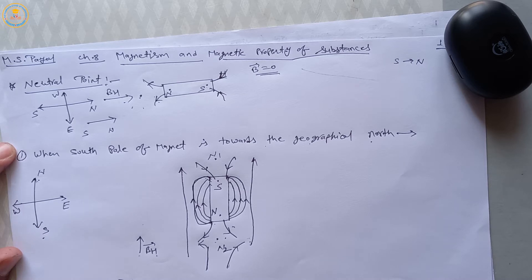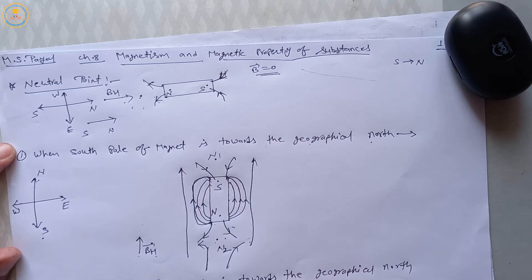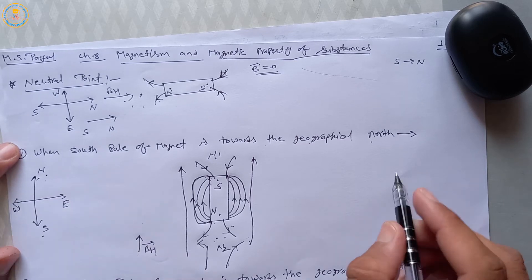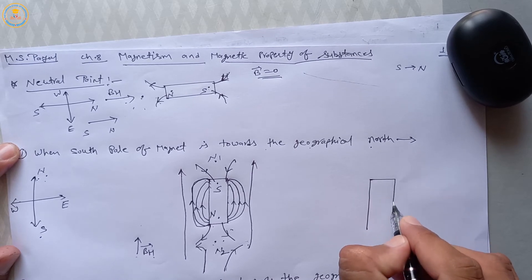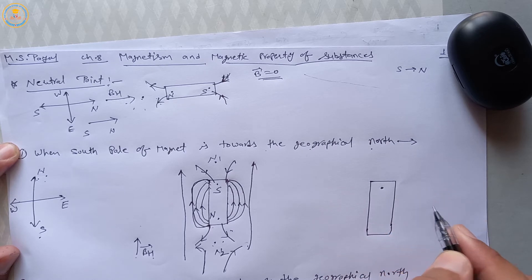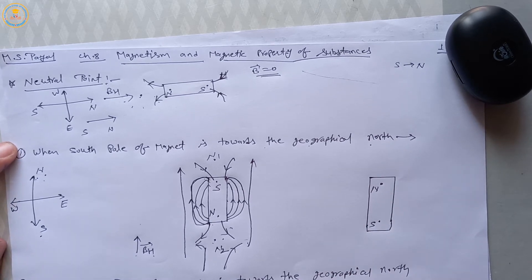The second condition is when the north pole of the magnet is towards the geographical north. Suppose the north direction of Earth is given. If we keep a bar magnet such that the north pole points towards the geographical north, then we again know that magnetic field lines start from north to south.